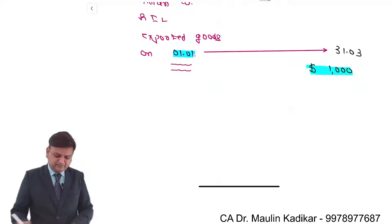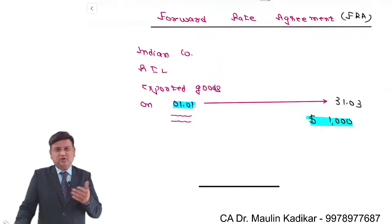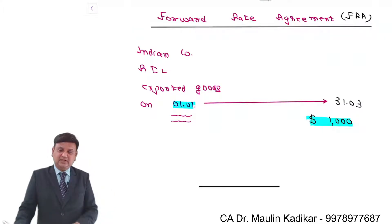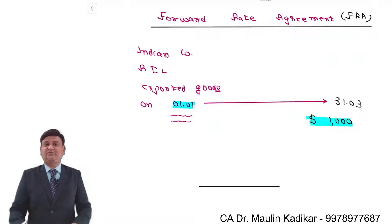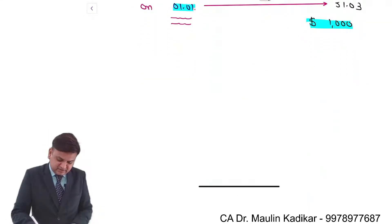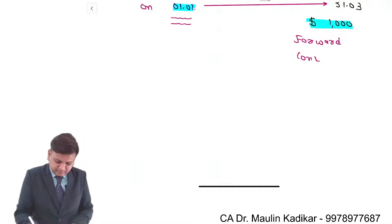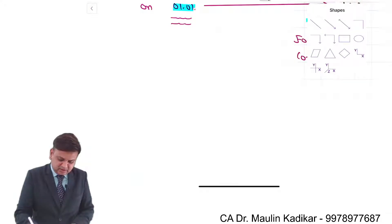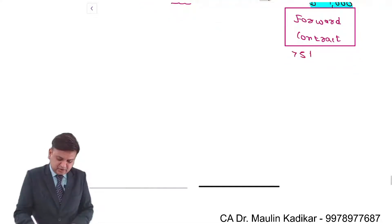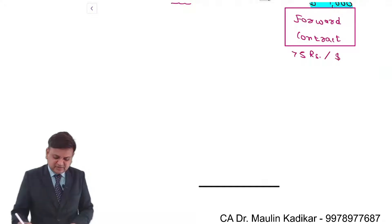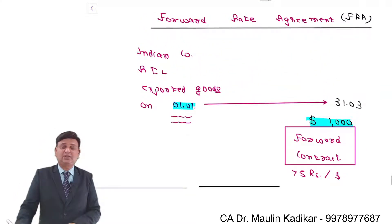So whatever this risk — the risk of exchange rate fluctuation — which Reliance company is having, it can be hedged. You can eliminate the risk from exchange rate fluctuation by entering into a contract called a Forward Contract. Let us assume that the forward contract is entered at a forward exchange rate of 75 rupees per dollar, which is the rate prevailing on 1st of January for 31st of March conversion of dollar into rupees.